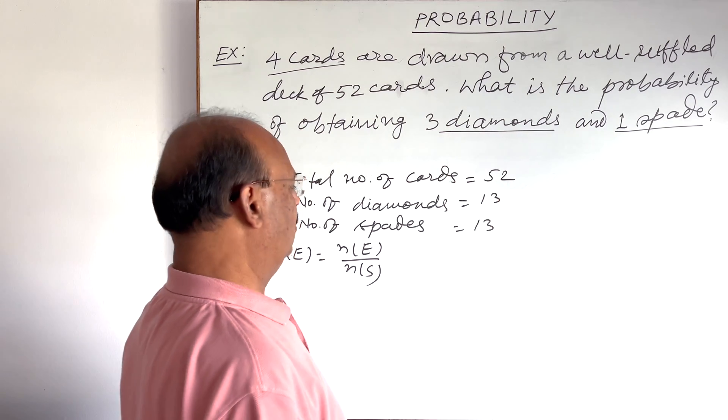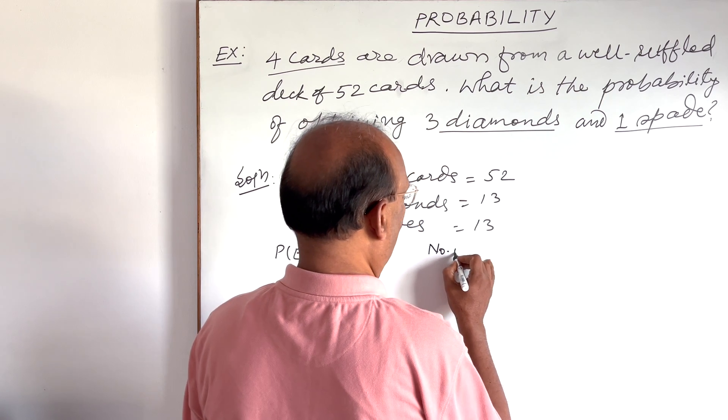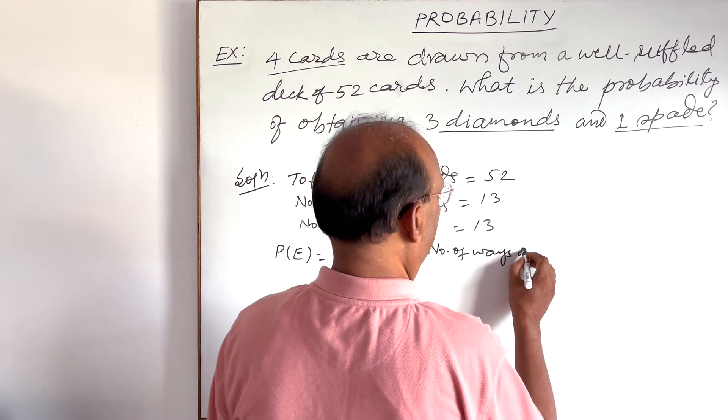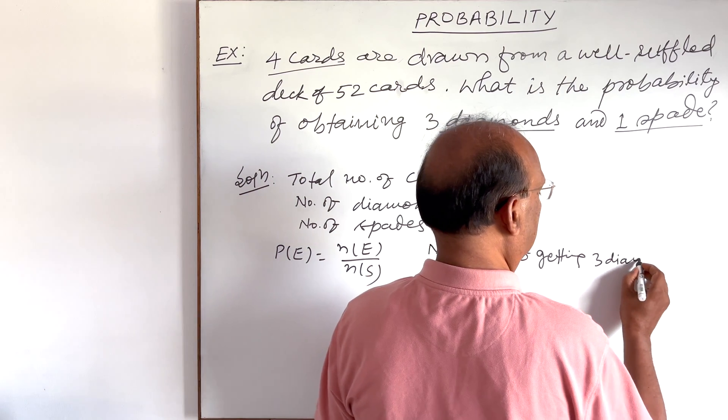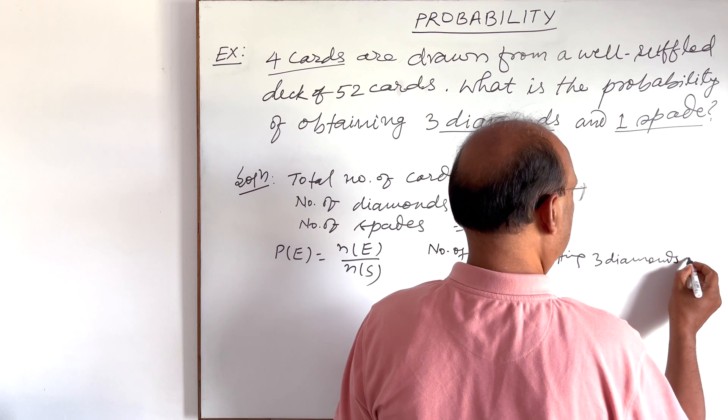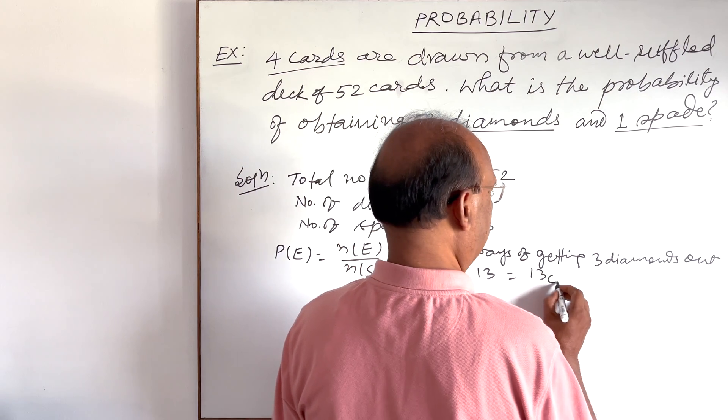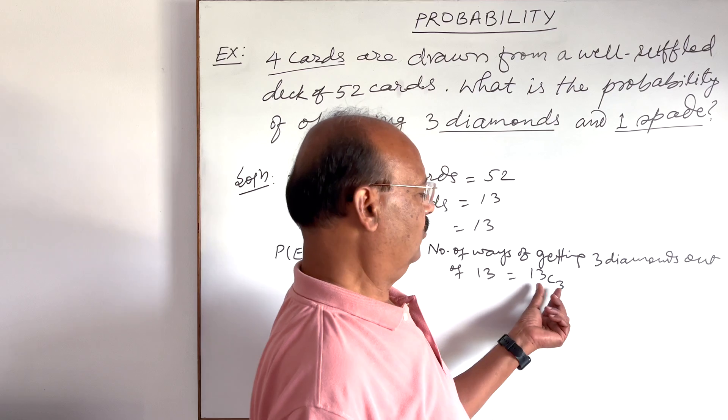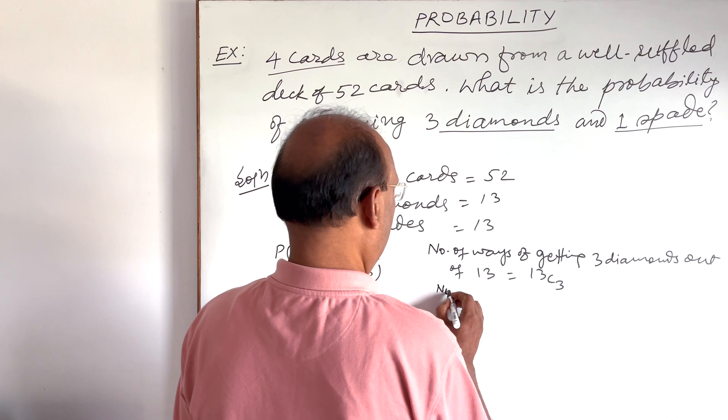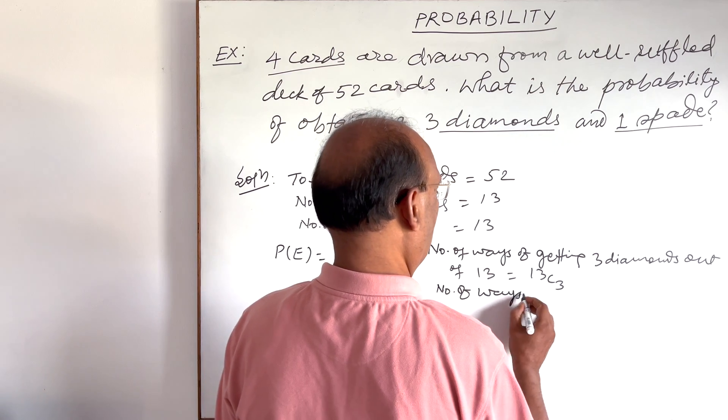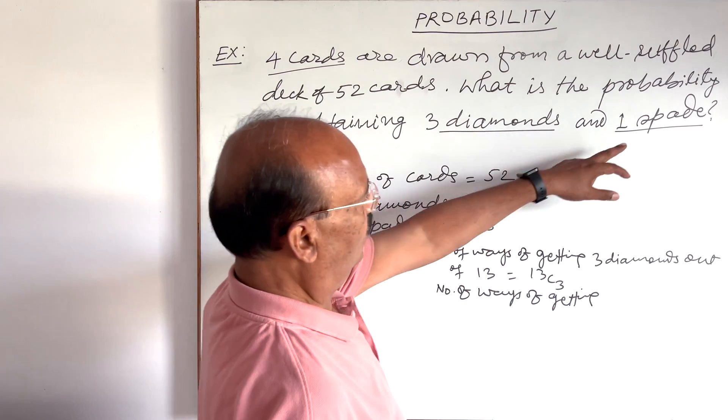So that can be related as number of diamonds is 13. We are using the formula of combination here. Number of diamonds is 13, so we will give number of ways of getting three diamonds and one spade.